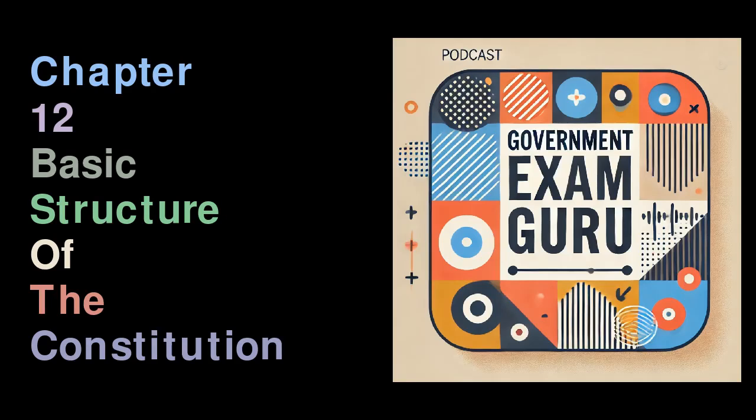The topic of whether the fundamental rights outlined in the Indian Constitution can be altered by Parliament under Article 368 has been an important subject of legal debate. Shortly after the Constitution was enacted in 1950, the Supreme Court of India examined this issue in the landmark Shankari Prasad case, 1951. This case questioned the constitutionality of the First Amendment Act, 1951, which limited the right to property.